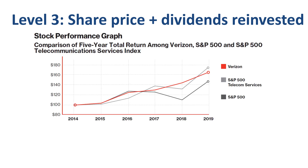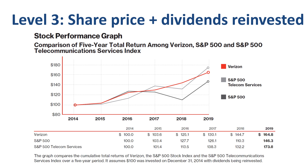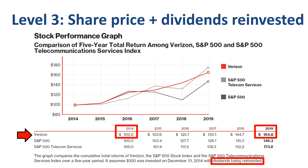You can find the same information when you review the annual report of a company. The 5-year total returns for Verizon are represented by the red line in the graph, versus total returns for the S&P 500 index in dark gray, as well as total returns for an industry-specific index in light gray. The graph shows how much money you would have after five years if you had started with $100 and reinvested the dividends along the way — specifically, $100 at the end of 2014 grew to $165 by the end of 2019.